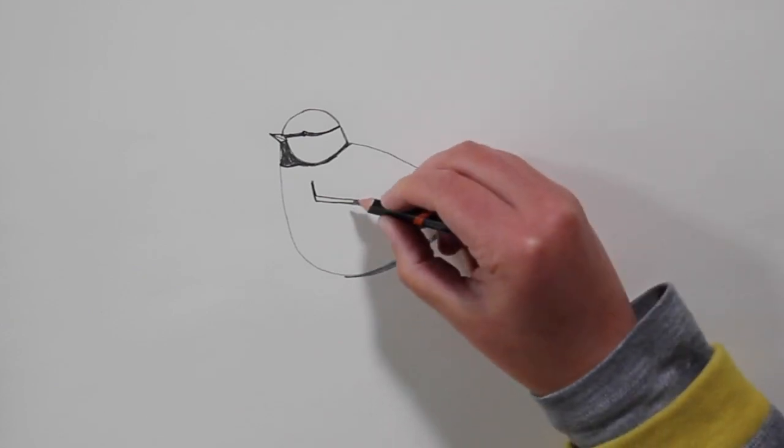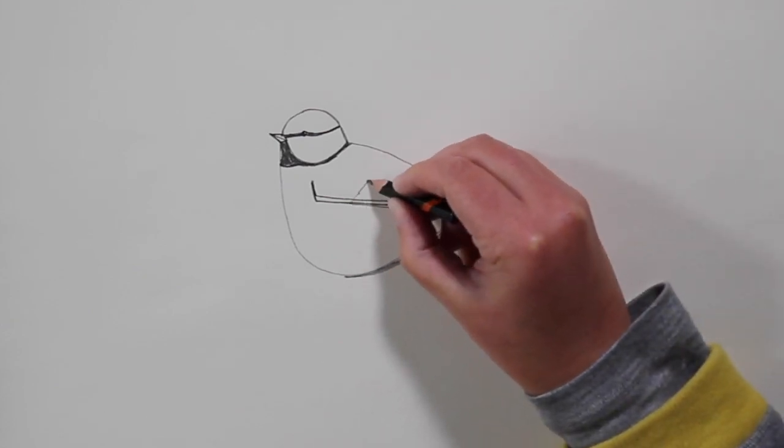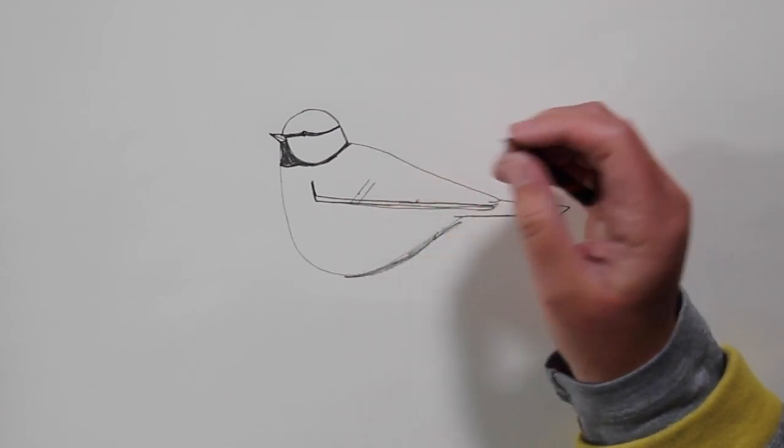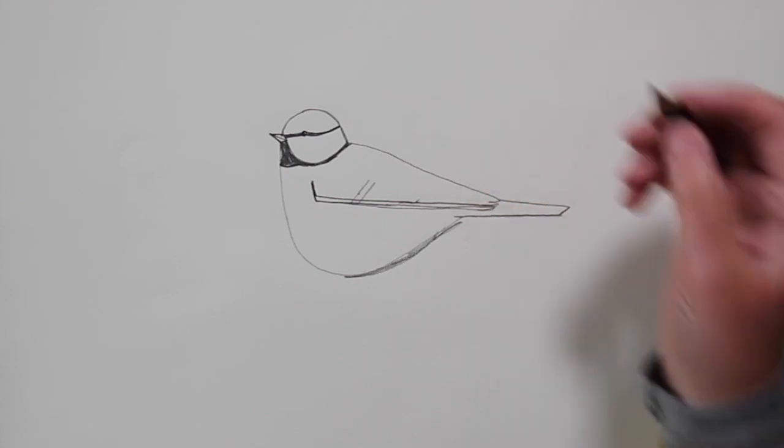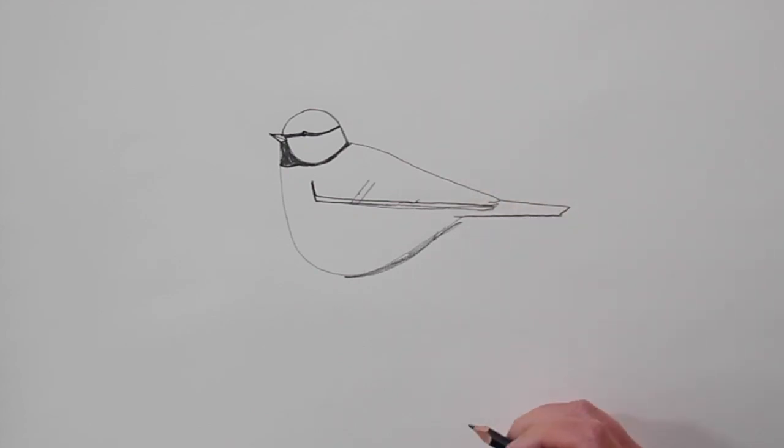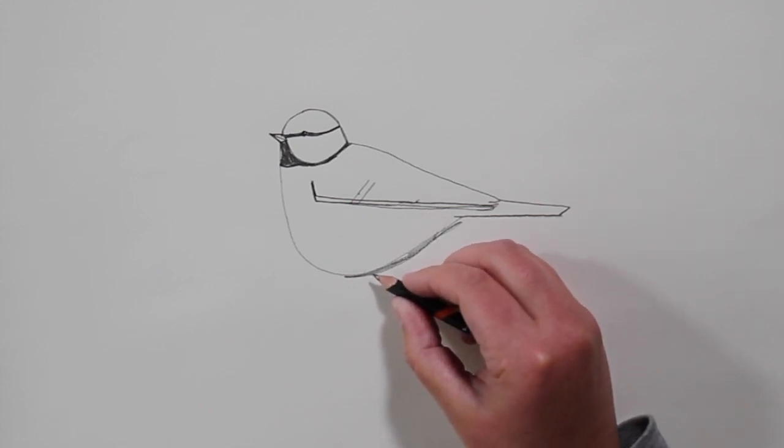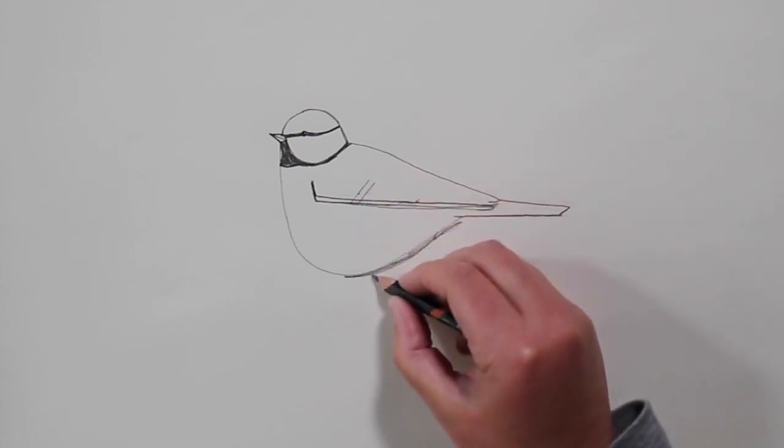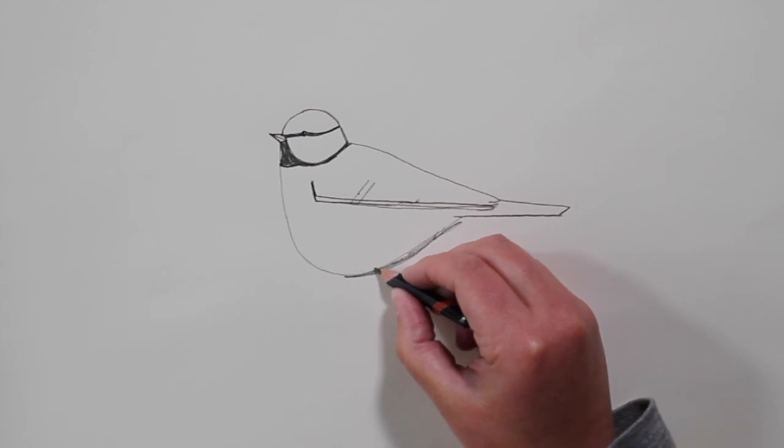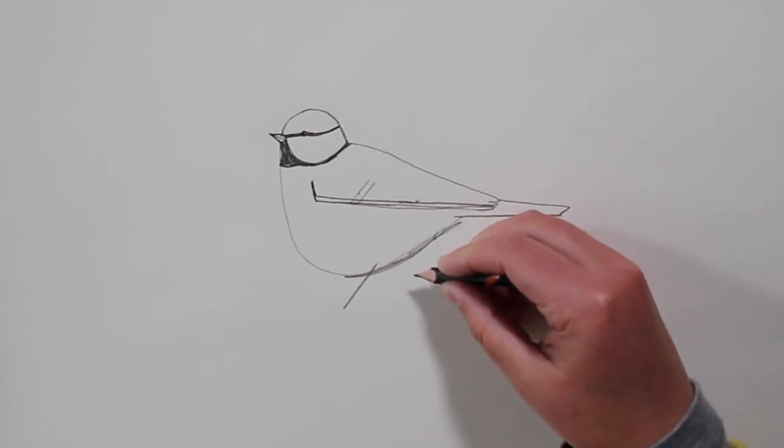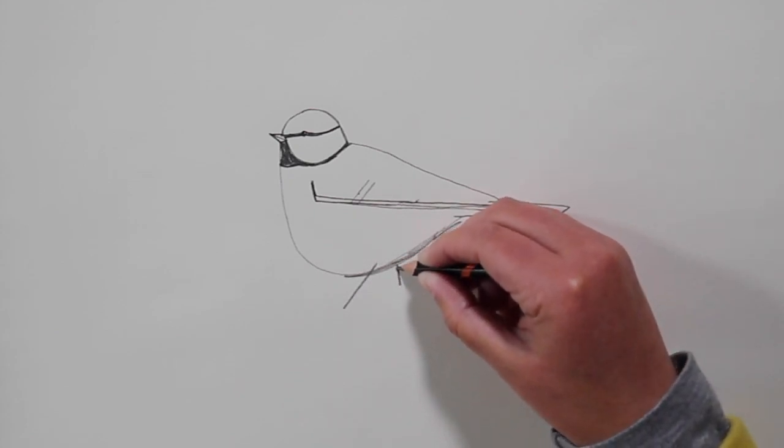And we'll carry on with our line here down to our wing feathers. And blue tits have a white band across their feathers, about there. So we'll not color that in with anything later on. And I think at this stage we will give our blue tit some legs. So from the white band to about here on its body, put a leg out here. And we'll put a leg here.